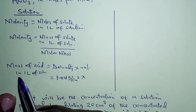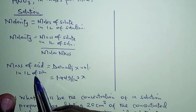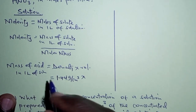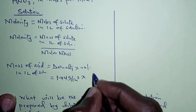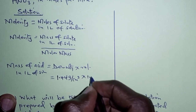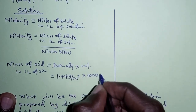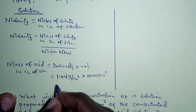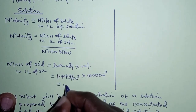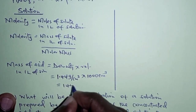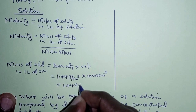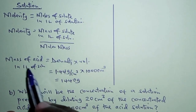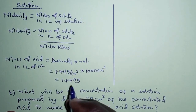We are determining the mass in 1 liter of solution, so 1 liter is 1000 cubic centimeters. When we multiply, we get 1440 grams. This is the mass of the acid in 1 liter of the solution.